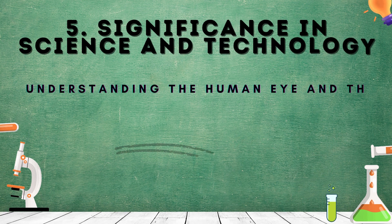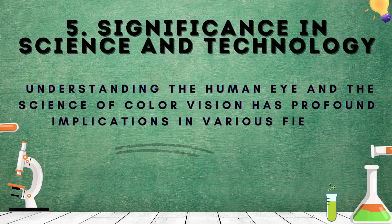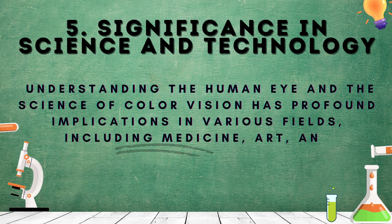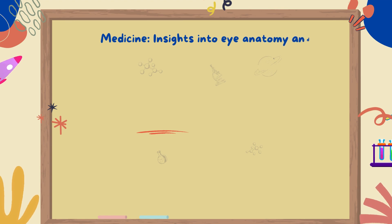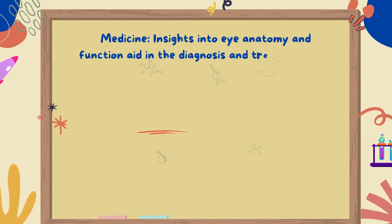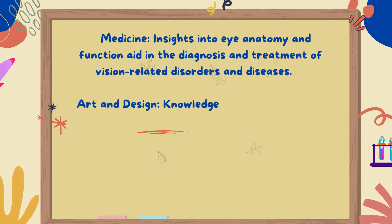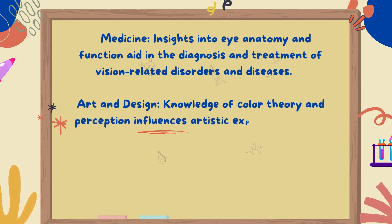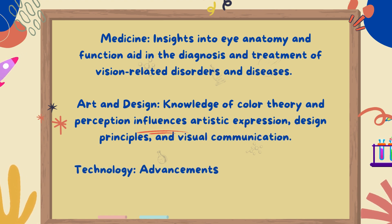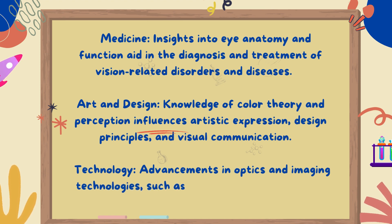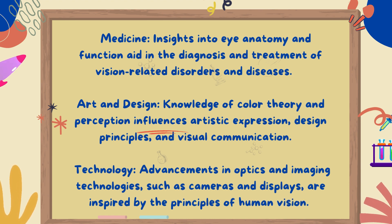Understanding the human eye and the science of color vision has profound implications in various fields, including medicine, art, and technology. In medicine, insights into eye anatomy and function aid in the diagnosis and treatment of vision-related disorders and diseases. In art and design, knowledge of color theory and perception influences artistic expression, design principles, and visual communication. In technology, advancements in optics and imaging technologies such as cameras and displays are inspired by the principles of human vision.